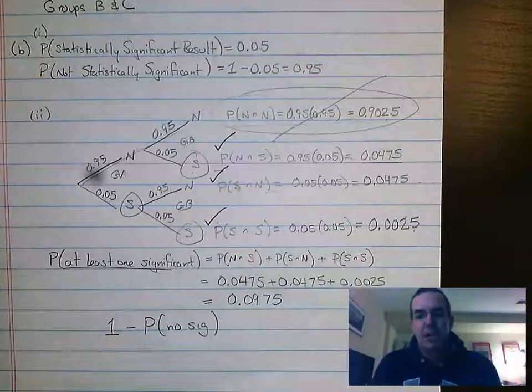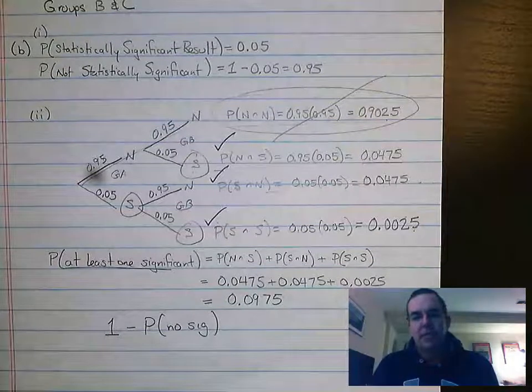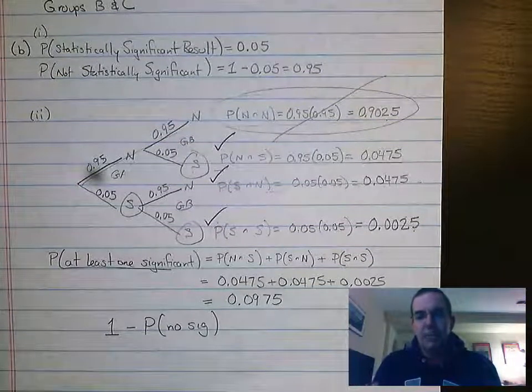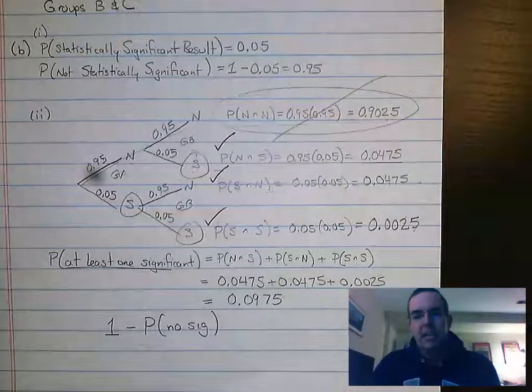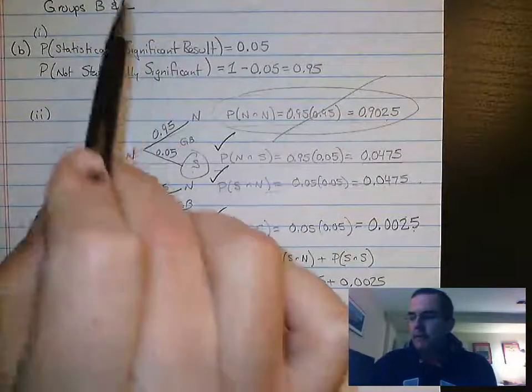Part B, very wordy, but realistically, the first part is literally asking you, we're looking at a significance level of 5% of 0.05, right?